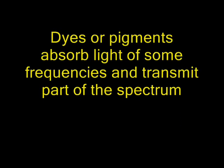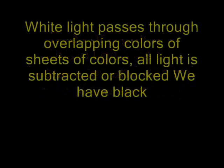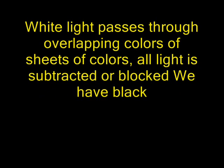Dyes or pigments absorb light of some frequencies and transmit part of the spectrum. When white light passes through overlapping sheets of colors, all light is subtracted or blocked, and then we only have black. Various combinations of yellow, cyan, and magenta produce any color in the spectrum.